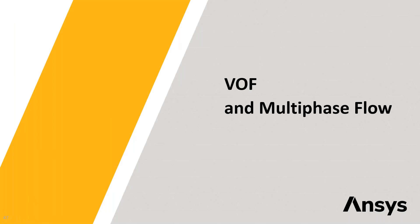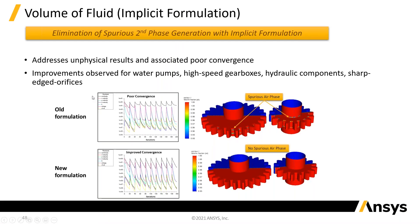Moving on to VOF and multi-phase flows. There were two VOF formulations: implicit and explicit. Implicit is where we're solving the equations implicitly and iterating at each step, and this is generally faster to solve because you can take much bigger time steps.